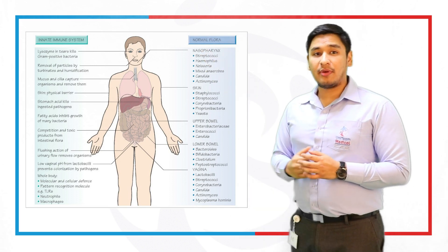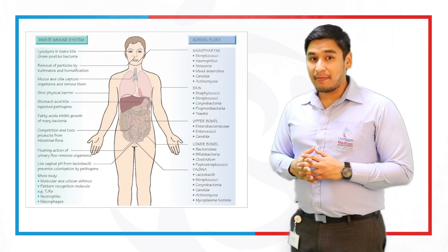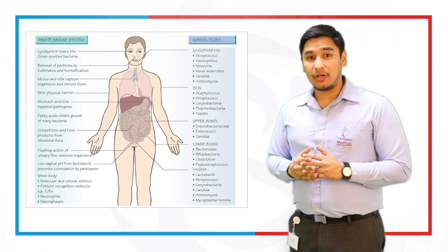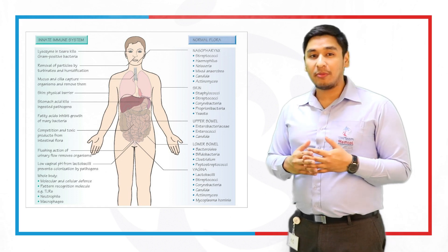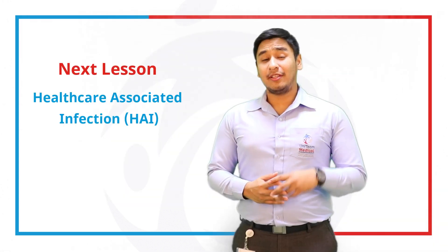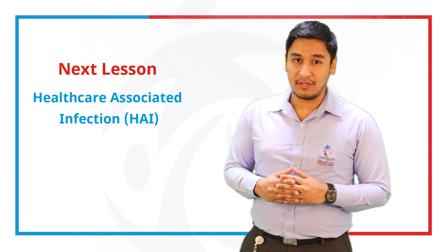Over here we have the diagram of the human body. Our innate immune system and normal flora, or resident flora as we said earlier, protects our body from foreign microorganisms that may cause an infection. In the next lesson, we are going to talk about healthcare-associated infections.